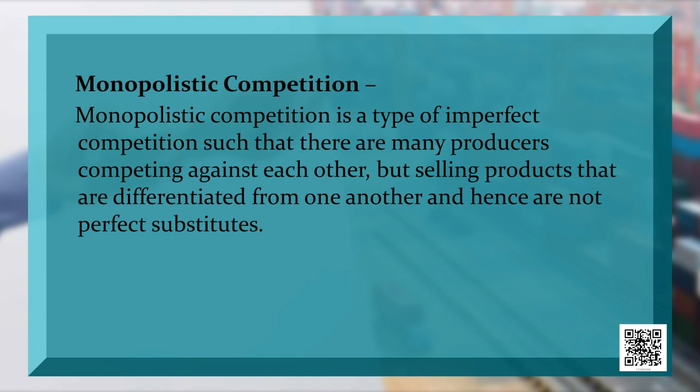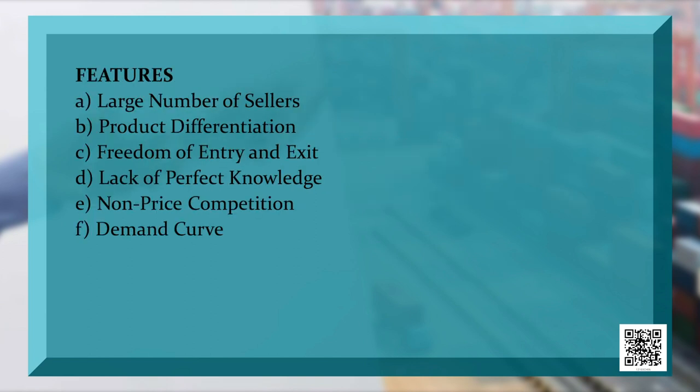There are many producers producing against each other but selling products that are differentiated from one another, and hence are not perfect substitutes to one another. The various features include a large number of sellers, meaning there are a variety of firms offering similar products in the market.